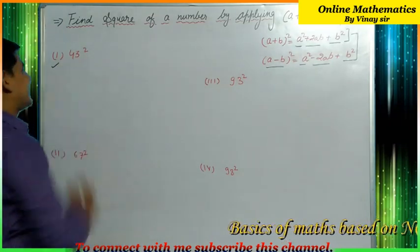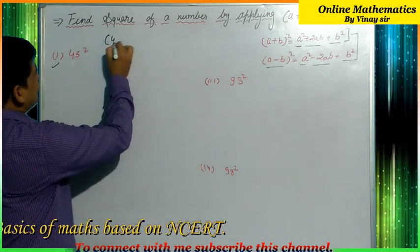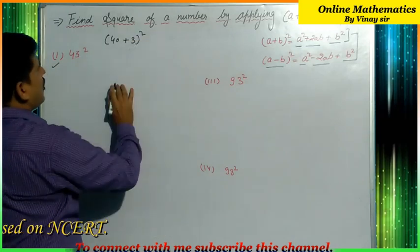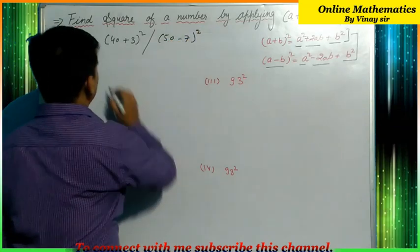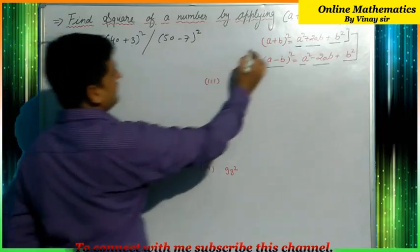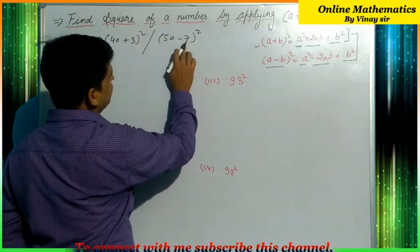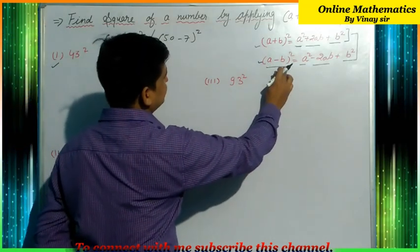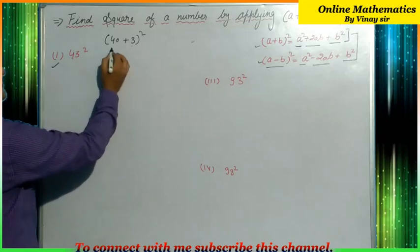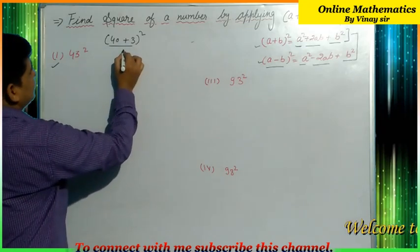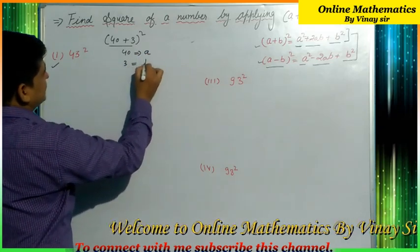The first example is 43². This 43² can be written as (40+3)², or we can write it as (50-7)². When we write (40+3)², we apply the (a+b)² identity. Here, 40 takes the place of a and 3 takes the place of b.